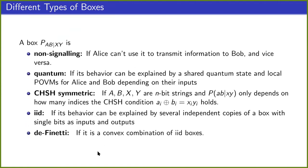Now there are different types of boxes that we want to distinguish, and the first property that is important is this non-signaling property, which just means that the box is such that Alice cannot use it to transmit information to Bob, and Bob cannot use it to transmit information to Alice.